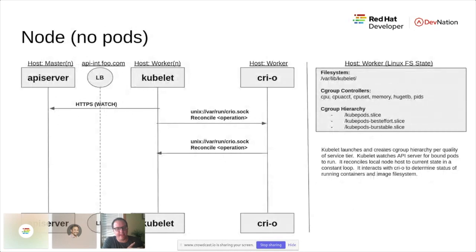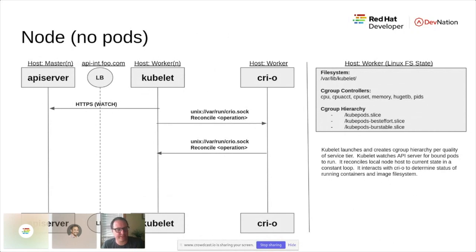Parallel to the API server — which is what the end user is interacting with — we have a set of worker machines connecting back to those control plane hosts to figure out what they should do. In a typical OpenShift deployment, you have a set of workers running RHEL CoreOS, which is our immutable operating system optimized for Kubernetes. Each RHEL CoreOS instance runs a kubelet process that acts as the client to our API server, asking which pods it should run.